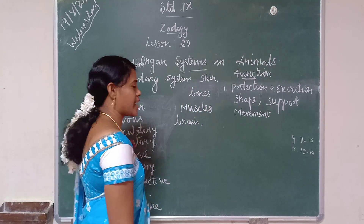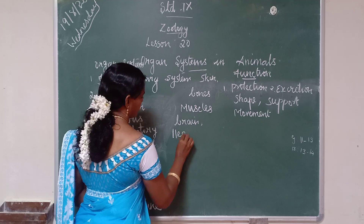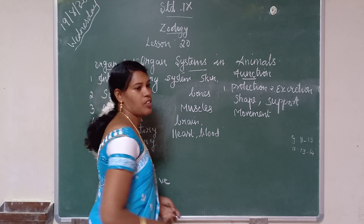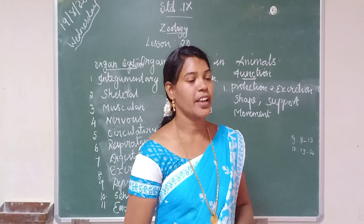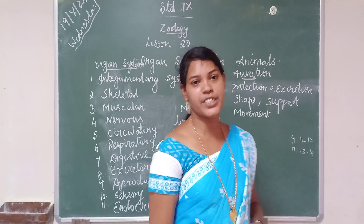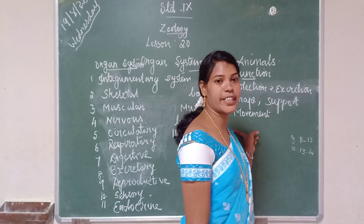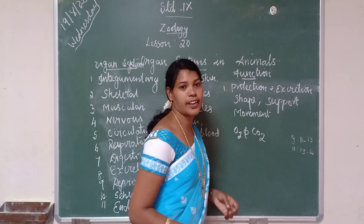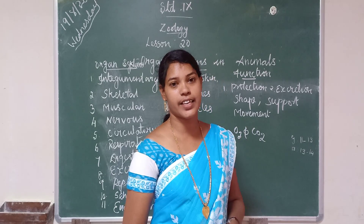The next one is the circulatory system. The organs are heart, blood, and blood cells. Its function is to transport nutrients, respiratory gases — that is oxygen and carbon dioxide — as well as waste products. The food we have taken is converted into nutrients.